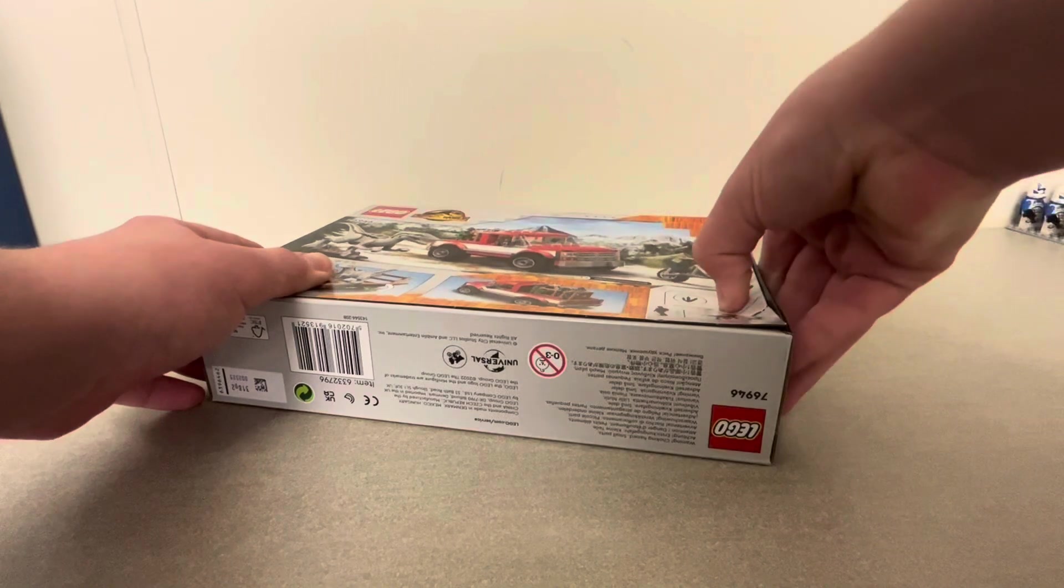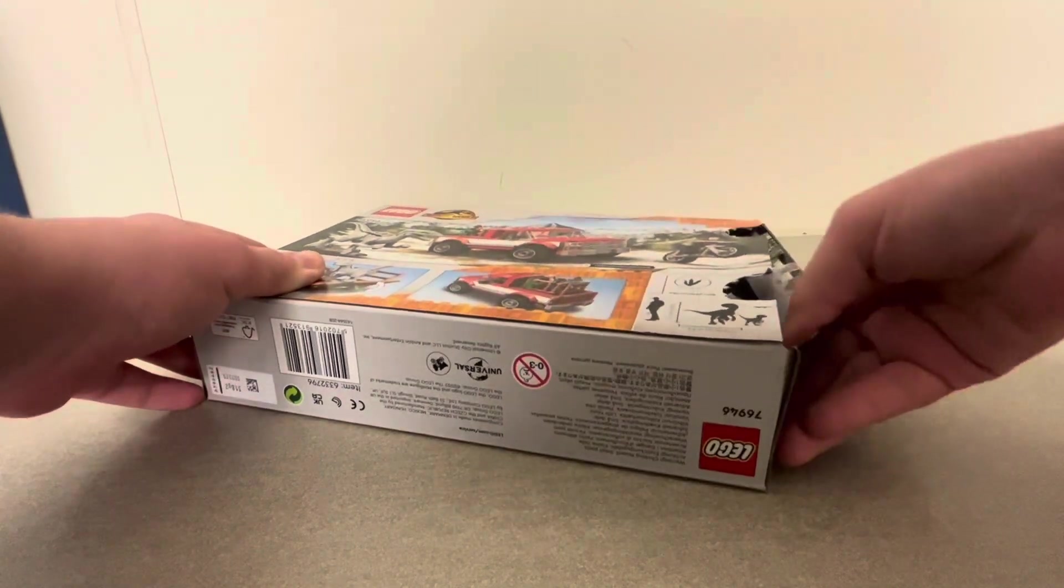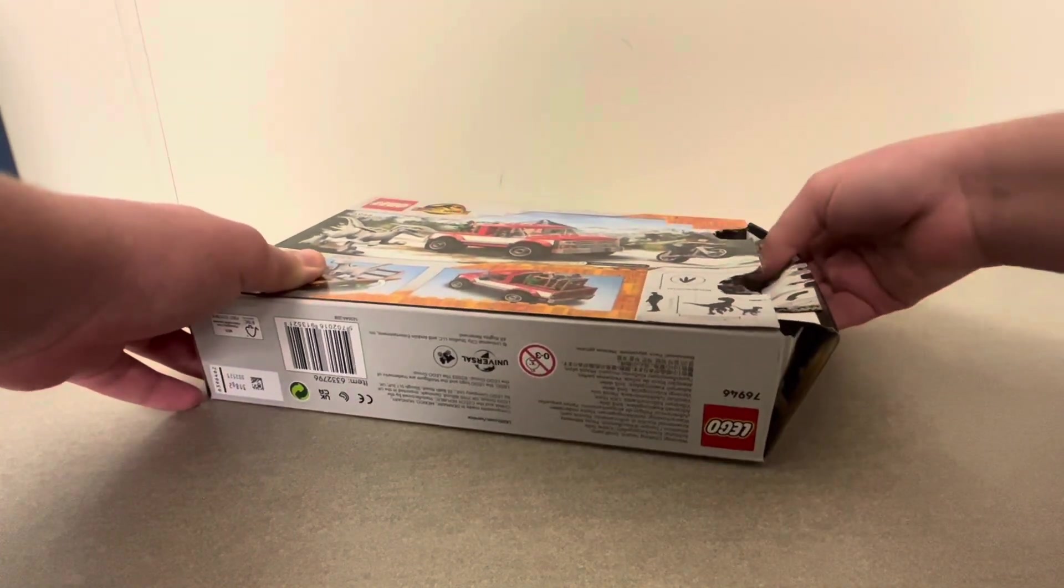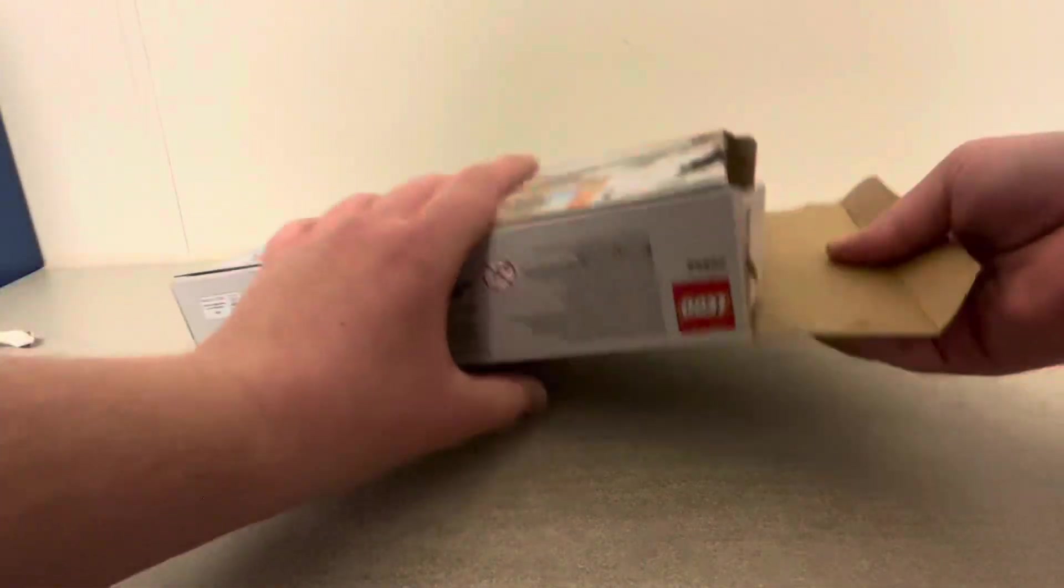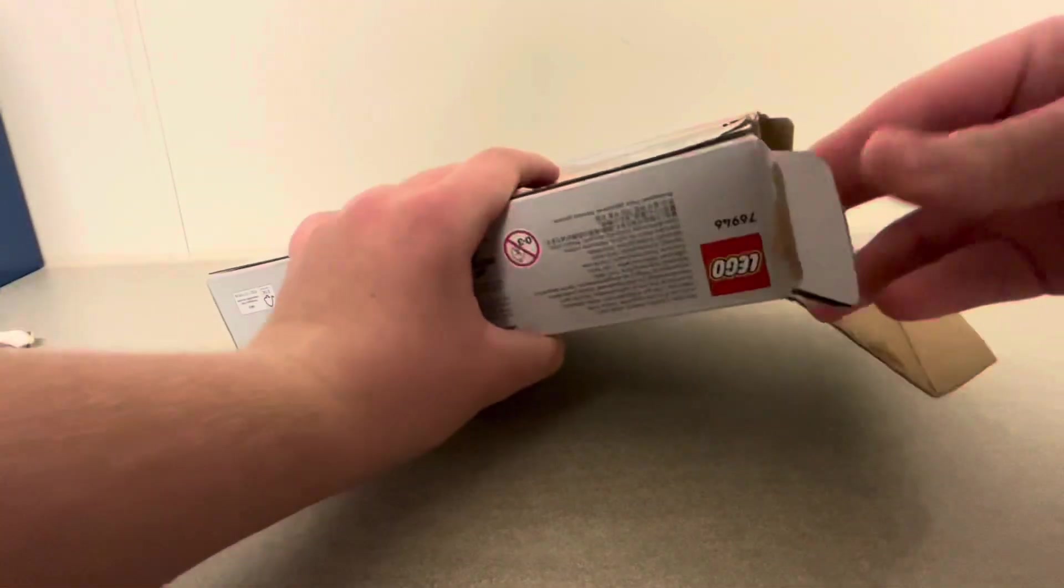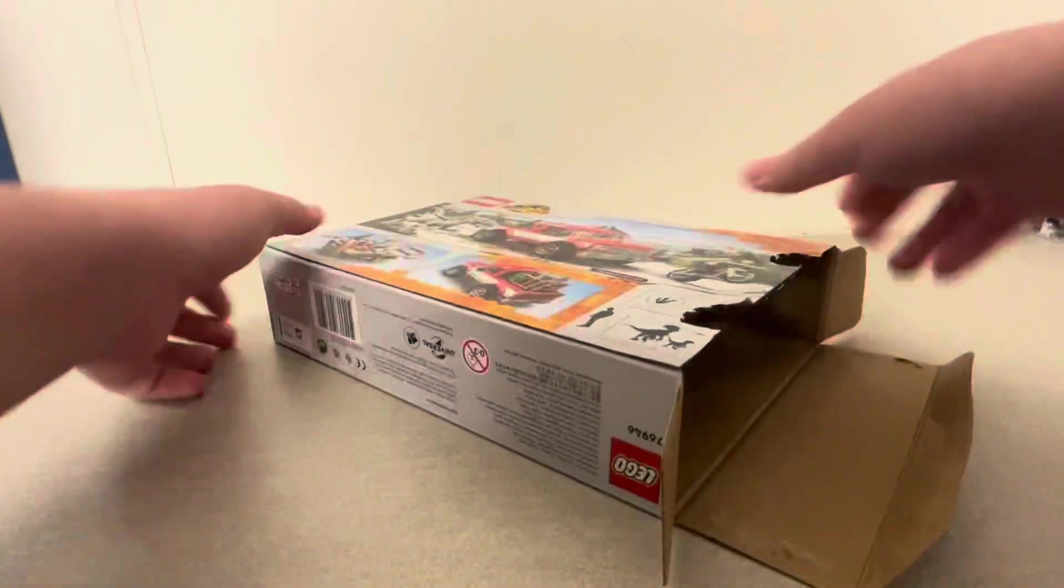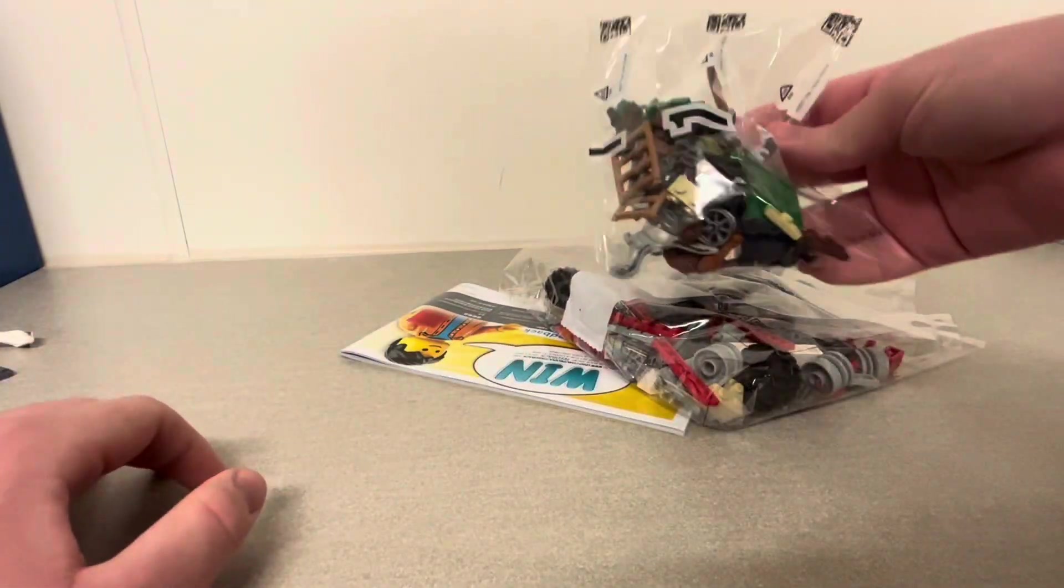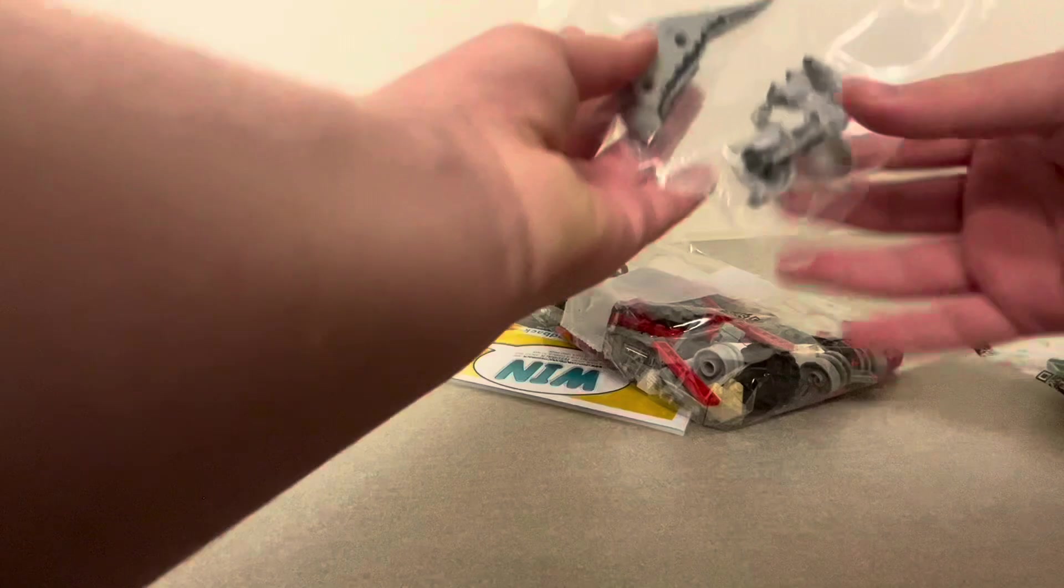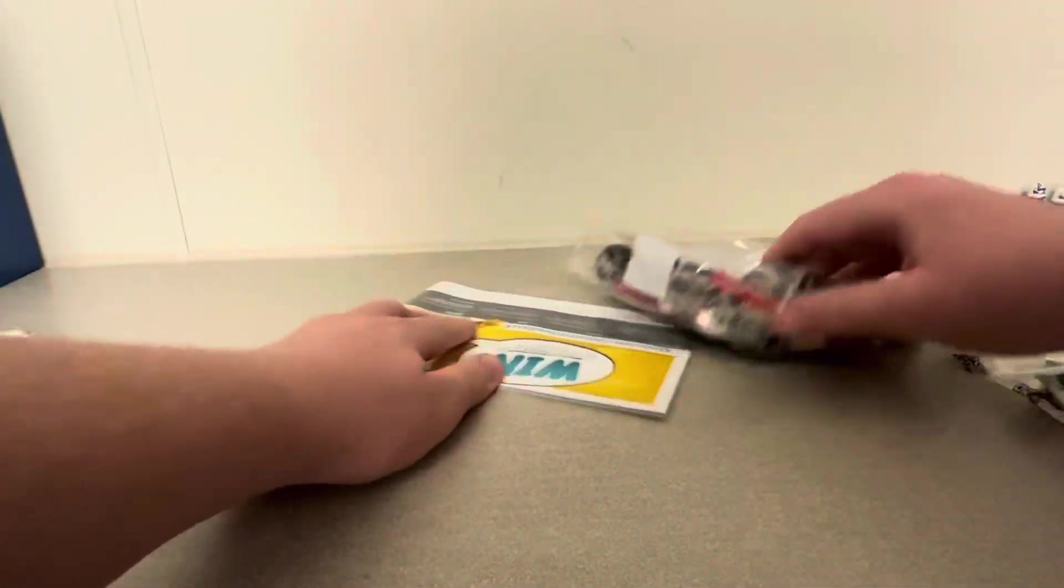This set has punch tabs which is like the last Jurassic World set that I reviewed on this channel. We have bag one, bag with Blue in it, bag two, and an instruction booklet. So let's get into the time lapse.